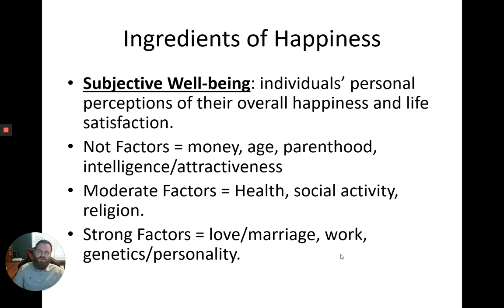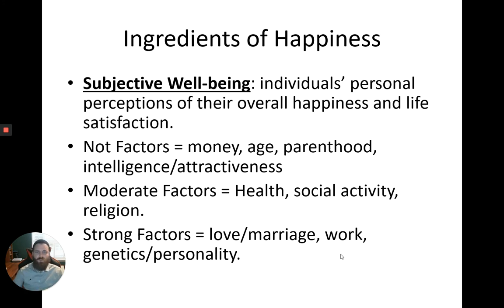Looking at one specific emotion — happiness — it's not a precise term because happiness changes for individuals. A better classification is 'subjective well-being': an individual's personal perception of their overall satisfaction and happiness in life. Research shows that money and age, parenthood, intelligence, and attractiveness are not strong factors of happiness, because you can find examples of people with or without each of these who are both happy and unhappy.